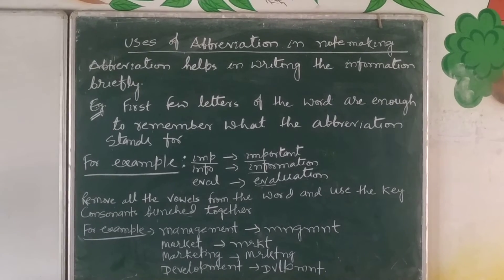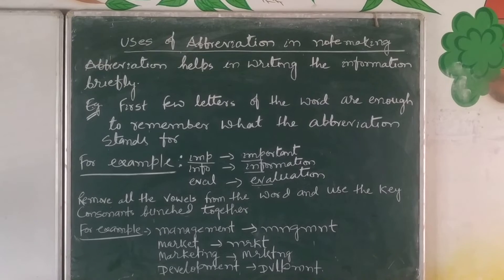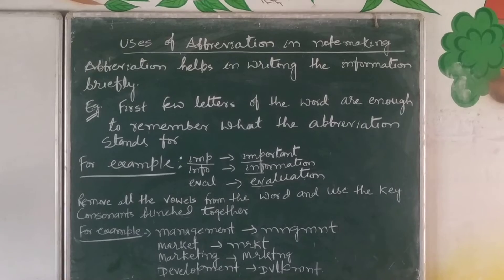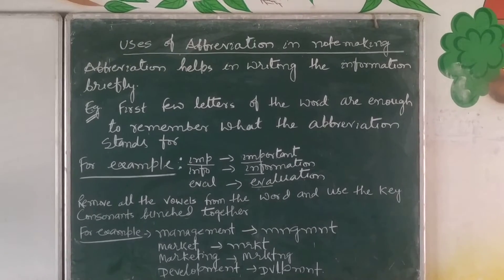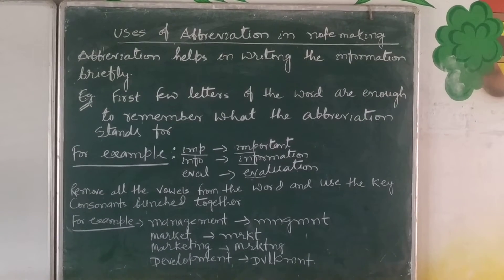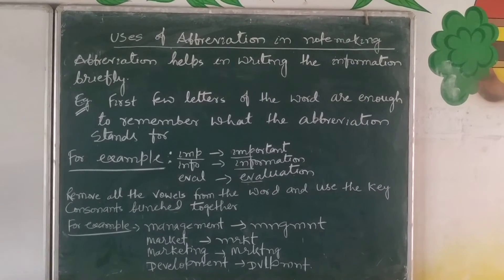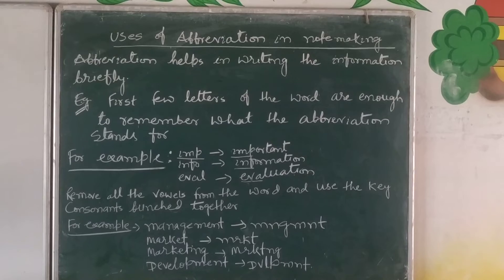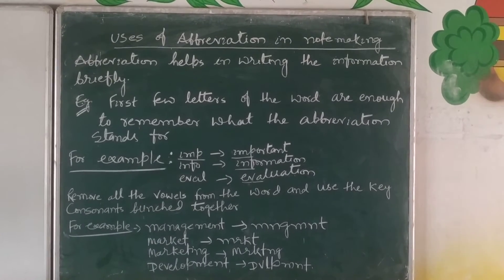First of all, we need to understand that the first few letters of the word are enough to remember what the abbreviation stands for. Suppose if you want to write 'important,' instead of important, if you are writing IMP, it means that this is called important — this is a symbol of important. Another one is 'information' — INF. If you are putting INF, it means information.